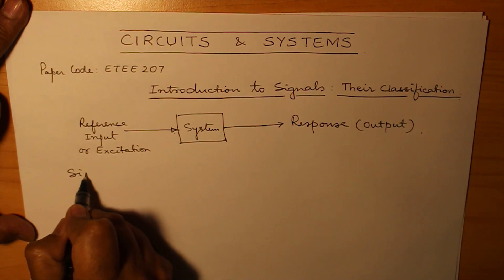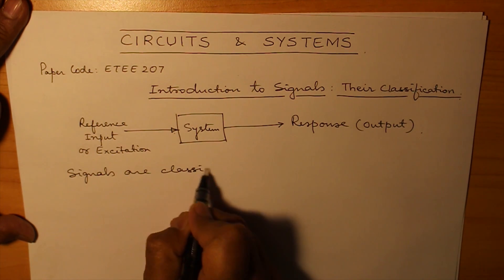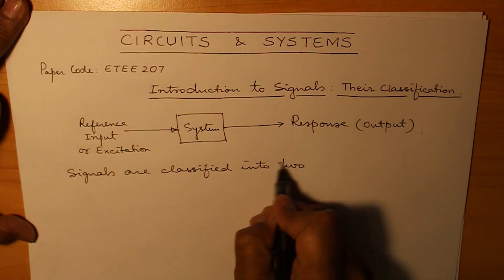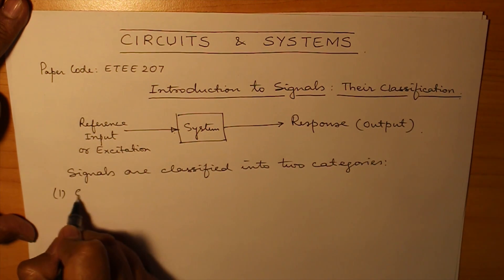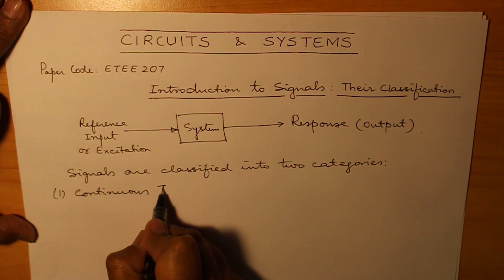Now, signals are classified into two categories primarily. The first one is continuous time signals and the next one is discrete time signals.